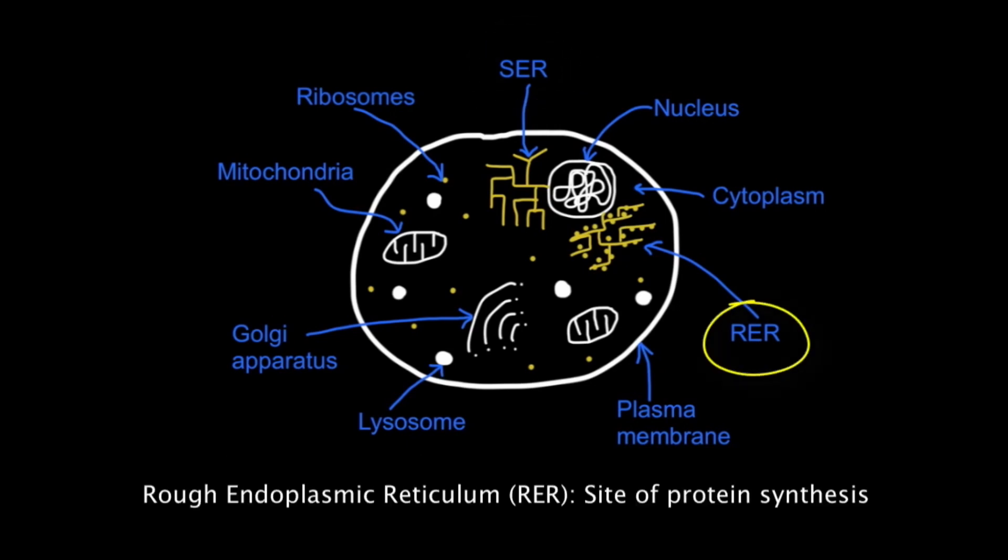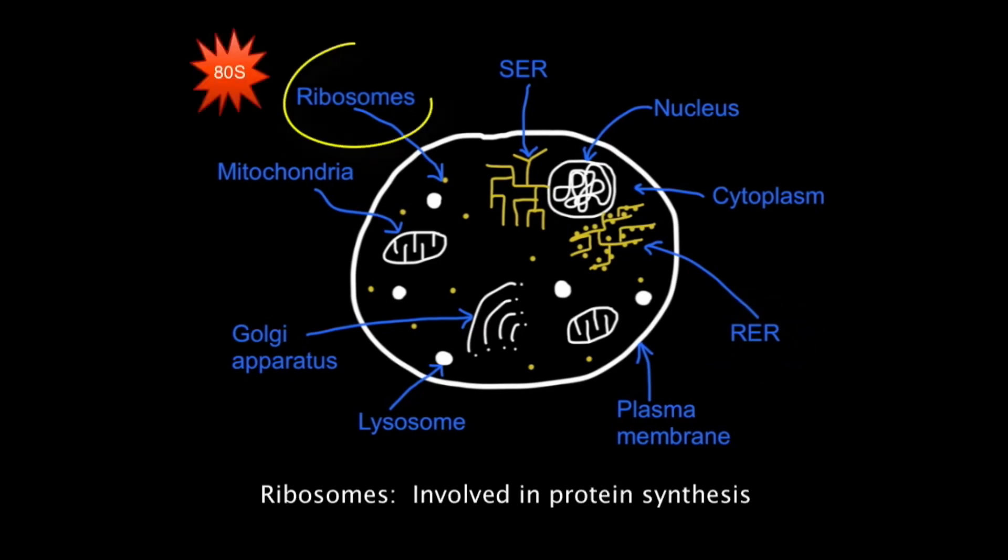The rough endoplasmic reticulum, with its attached ribosomes, has protein synthesis as its primary function. This is also the primary function of 80S ribosomes, whether attached to the RER or free-floating in the cytoplasm.